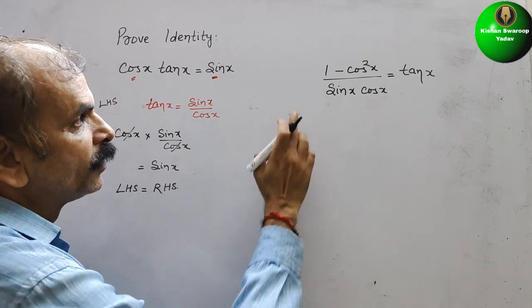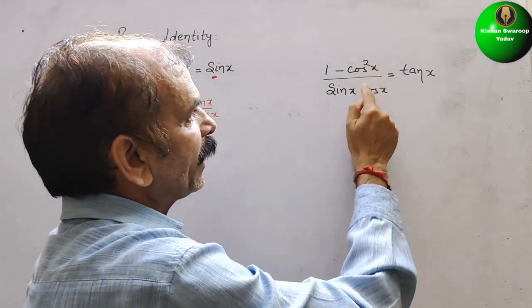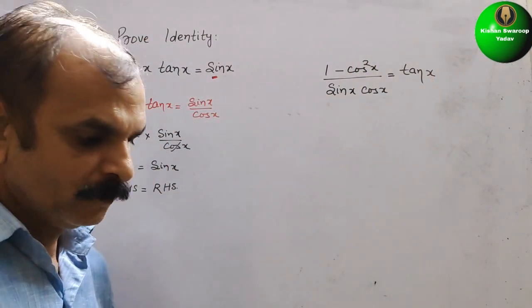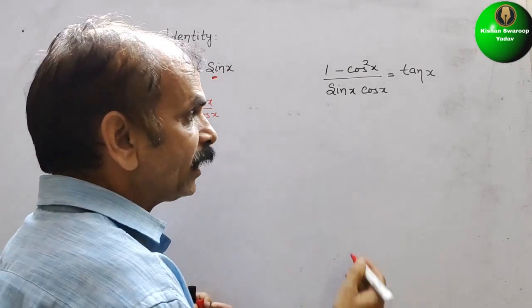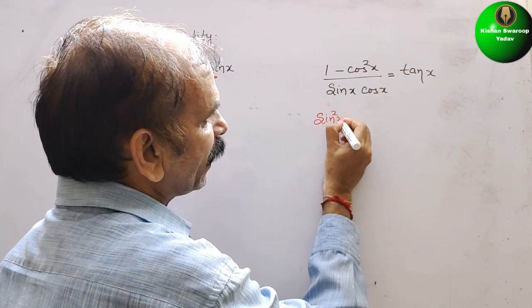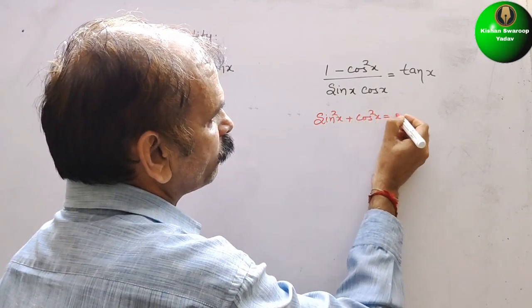Next, you can see this: 1 minus cos square x by sin x cos x is equal to tan x. There is one identity. What is that in terms of square of sin and cos? That is sin square x plus cos square x is equal to 1.